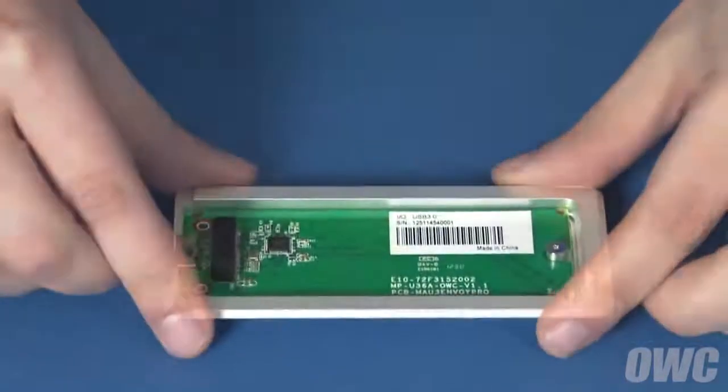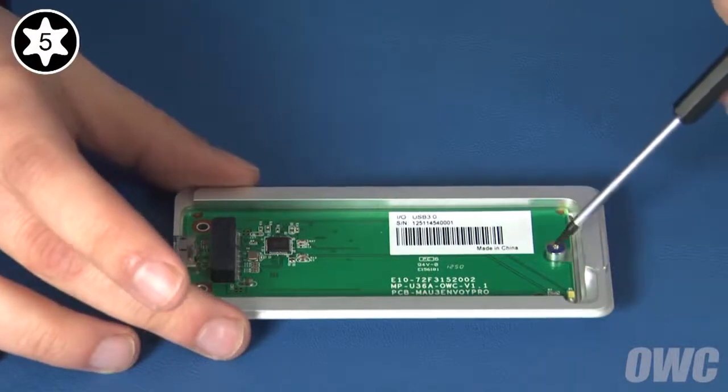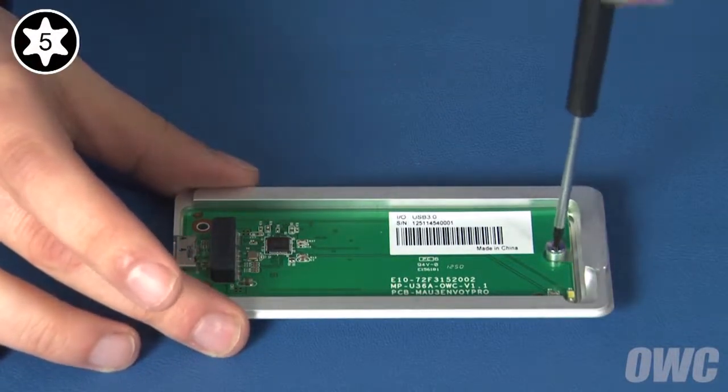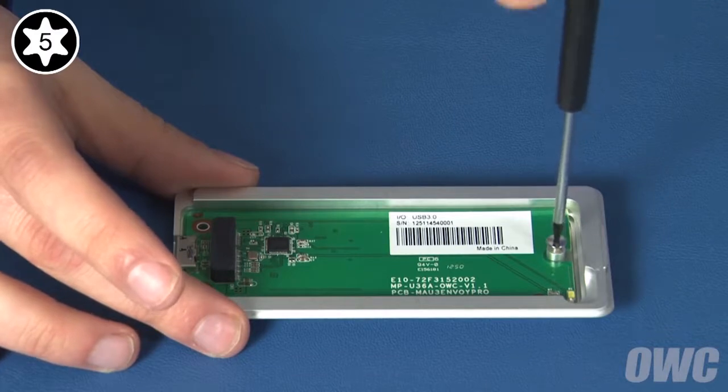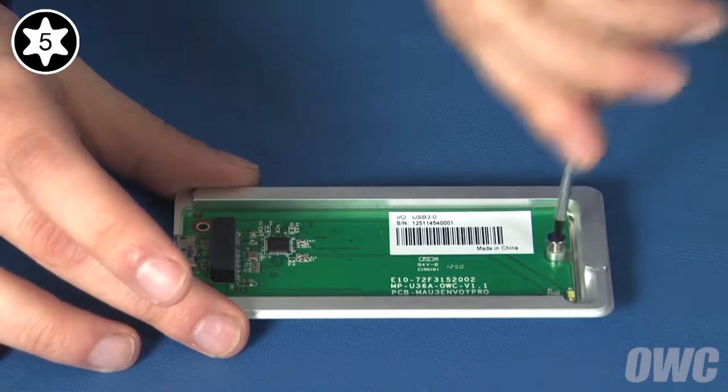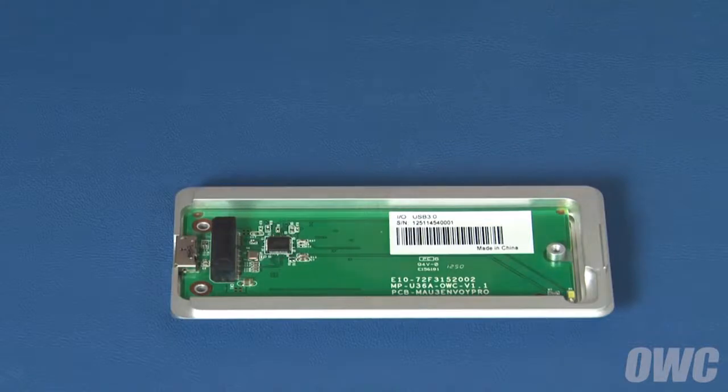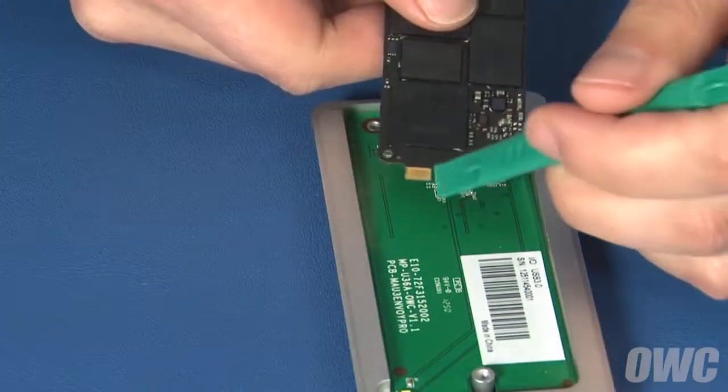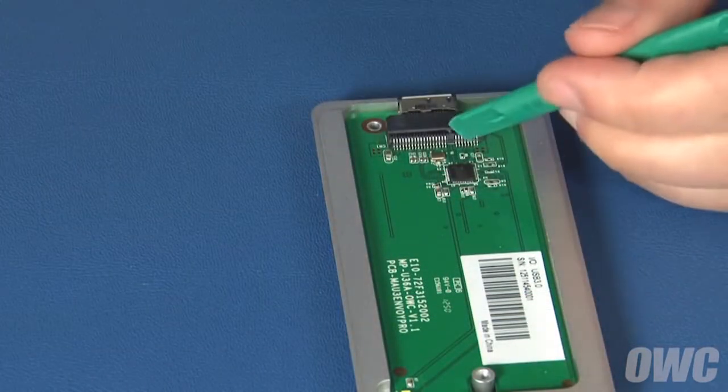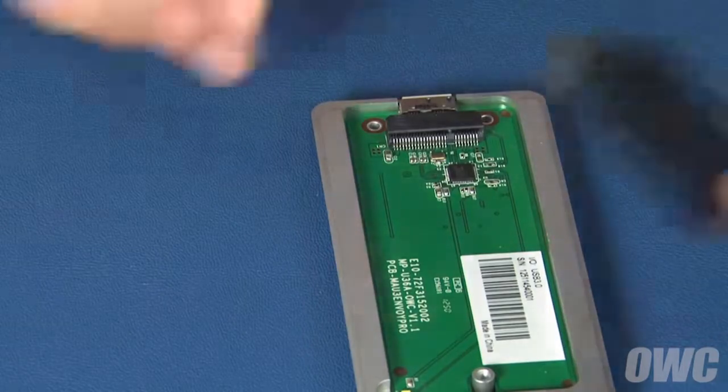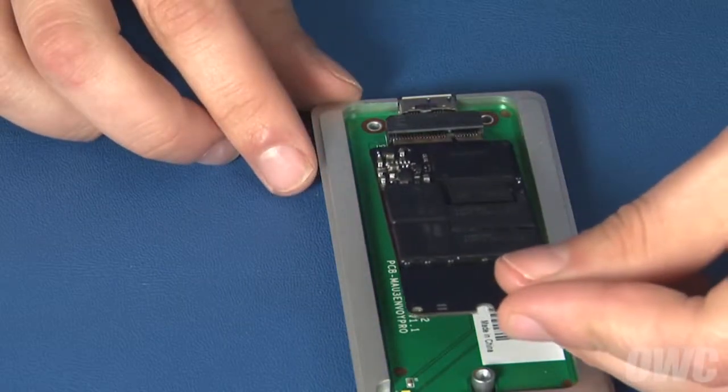Flip the bottom half back over and remove this Torx T5 screw. Once that's removed, we can insert the SSD module. The notch in the SSD module lines up with the pin in the Envoy's connector. Align the two and slide them together.